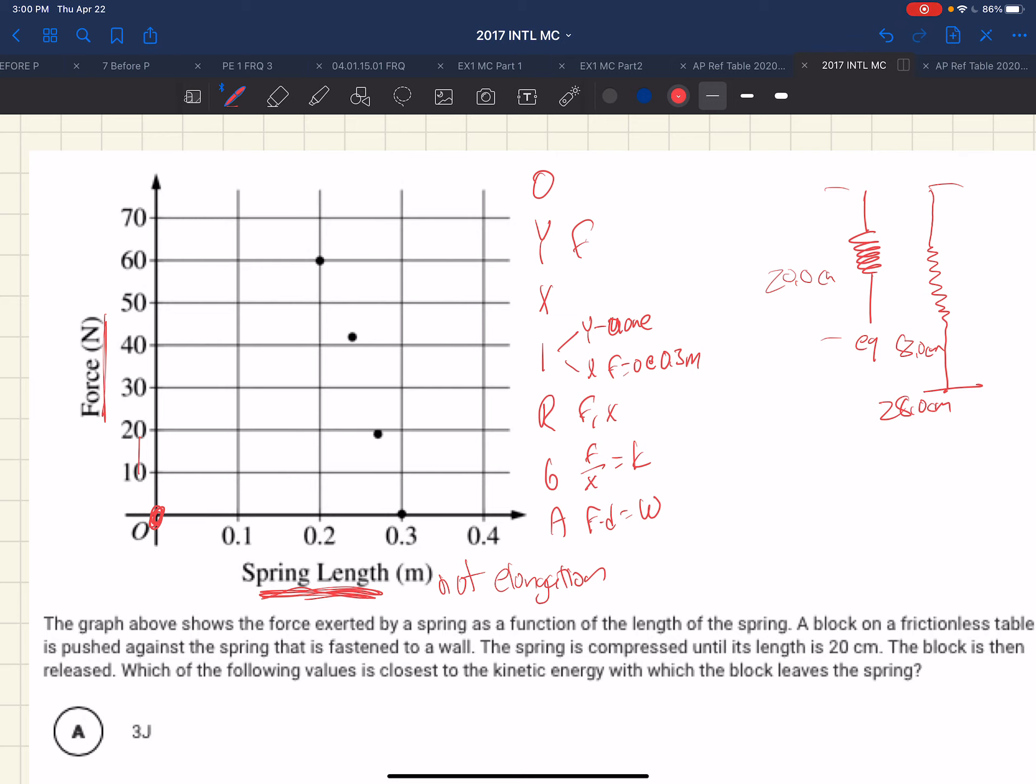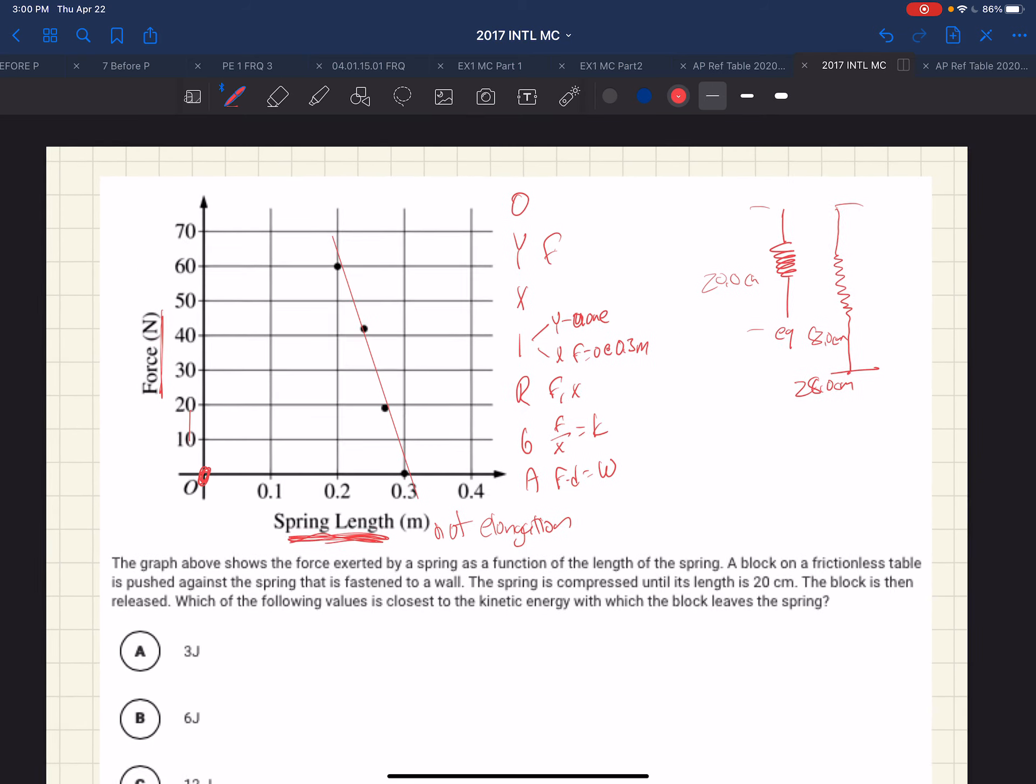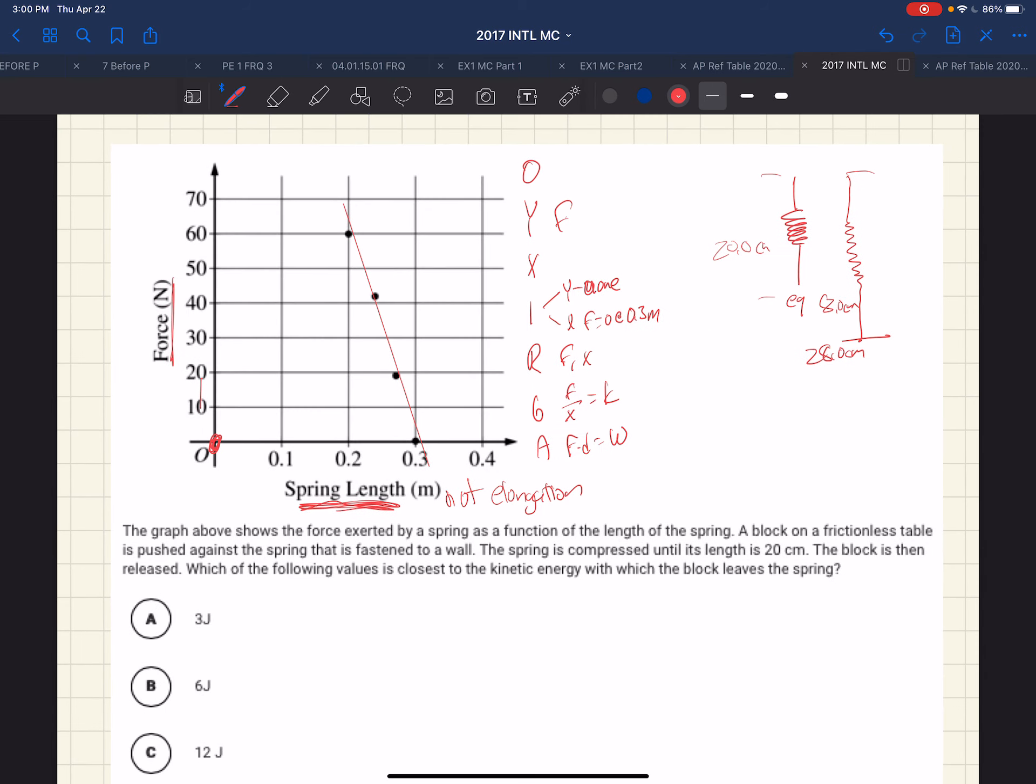We look at the function here. We might say that's a straight line, given some minor uncertainties. So the force of the spring is a function of the length of the spring. A block on a frictionless table is pushed against the spring that is fastened to the wall. So this looks like our horizontal situation.